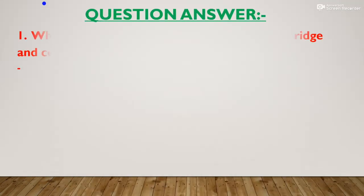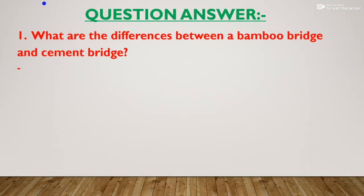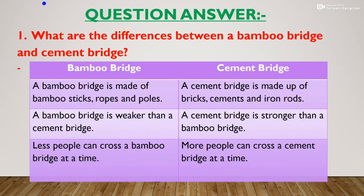Now we will check our understanding with comprehension questions. First: what are the differences between a bamboo bridge and a cement bridge? A bamboo bridge is made up of bamboo sticks, ropes, and poles, but a cement bridge is made up of bricks, cement, and iron rods. A bamboo bridge is weaker than a cement bridge. Fewer people can cross a bamboo bridge at a time but more people can cross a cement bridge.